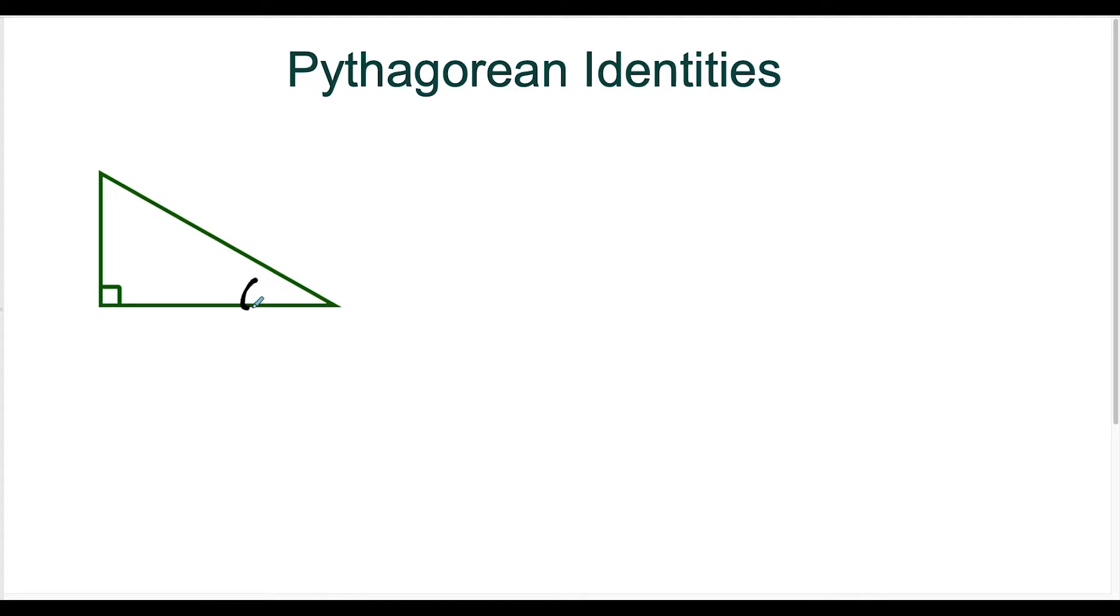So let's take a look at this right triangle here. And let's say I call this theta. And then this side here will label as O, this side will label as A, and this one will label as H to represent the side opposite, adjacent to theta, and the hypotenuse.